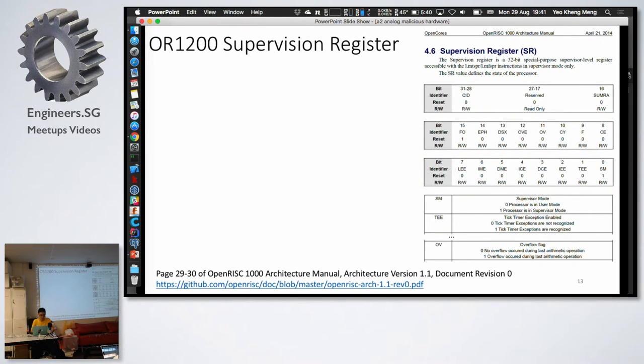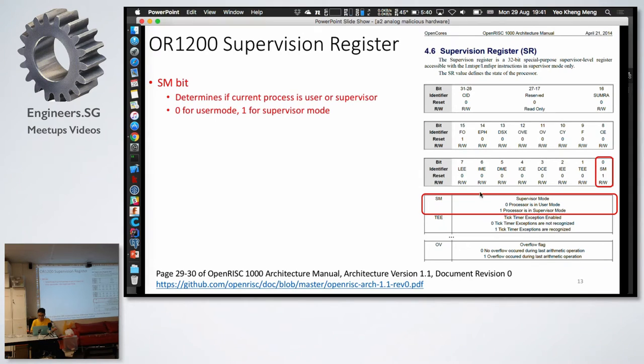I'll go into a bit into one of the registers they have because they use this register quite often in this attack. This register is called the supervision register. I've copied out this page here from their datasheet because the paper did not do it. In this register, the first bit is to control the supervisor mode here. If it's zero, it means the current process is user mode process. If it's one, that means it can be a supervisor process, a root access or something like that. Then in this, the 11 bit here, this is the overflow bit. If the last arithmetic operation overflows, the value will change. If zero, it means there's no overflow in the previous operation. Then if there is overflow, it will be one, for this OV bit.